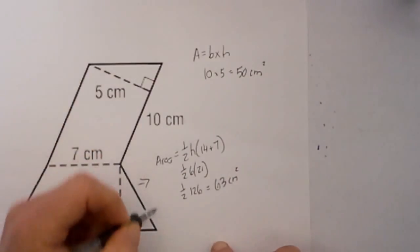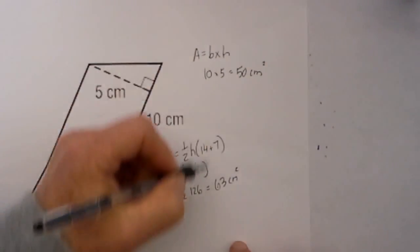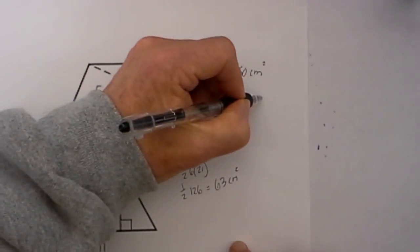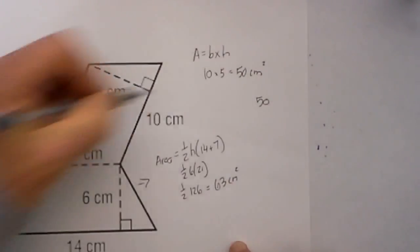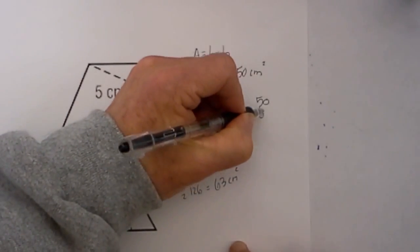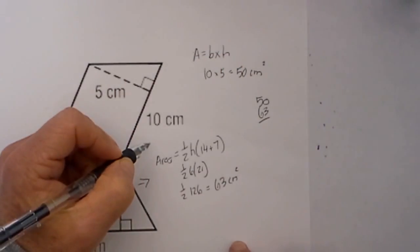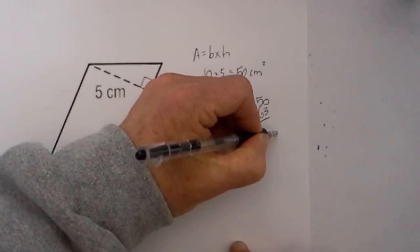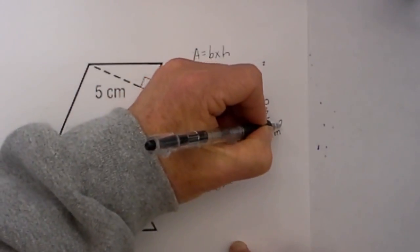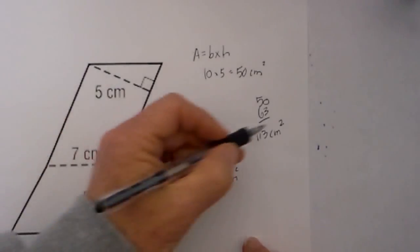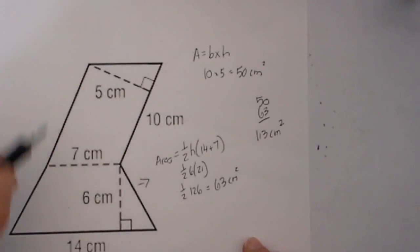So now we add these two together. We have the area of the first shape, which is 50, plus the area of the second shape, which is 63, and that gives us a grand total of 113 cm, and the area is always square. So there we go—that would be the total area of this composite figure.